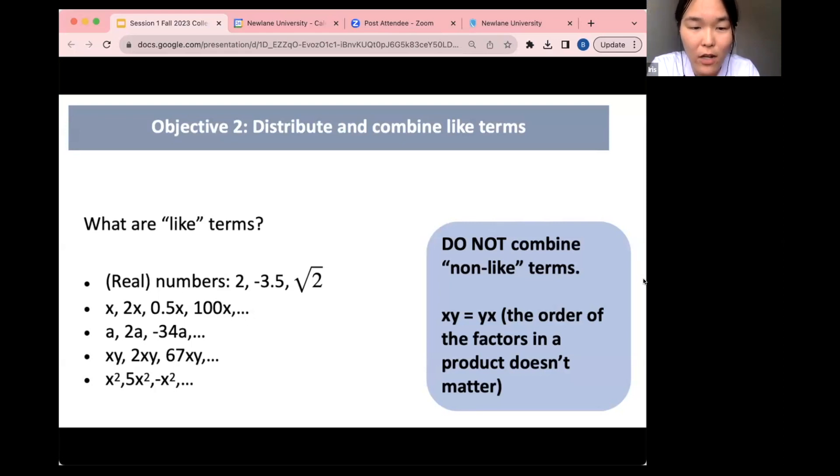So I cannot—like x and a are not like terms, but x and 2x are like terms. X squared and x are not like terms, but x squared and 5x squared are considered like terms. So I could add x squared to 5x squared and get 6x squared. Do not combine non-like terms. If the terms are not the same, just write them separately. Don't try to group them unless we say factor or something, but otherwise just leave them separate.